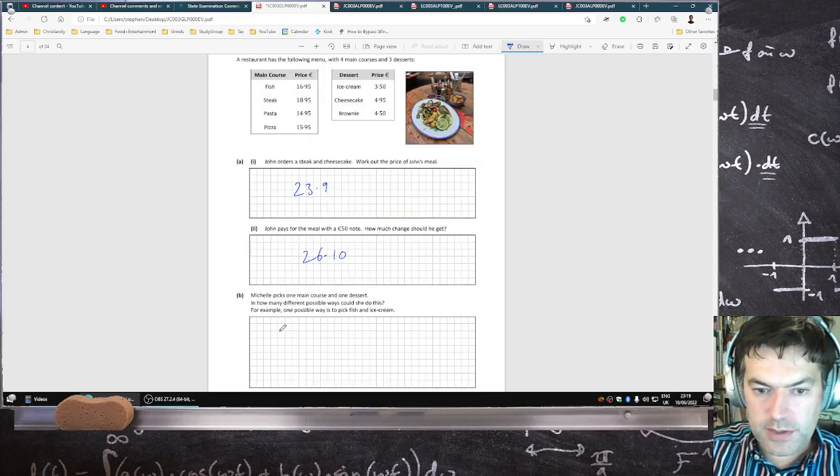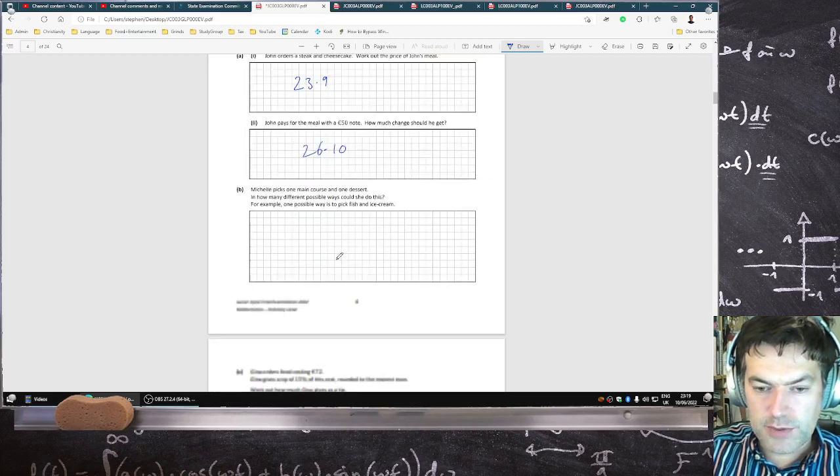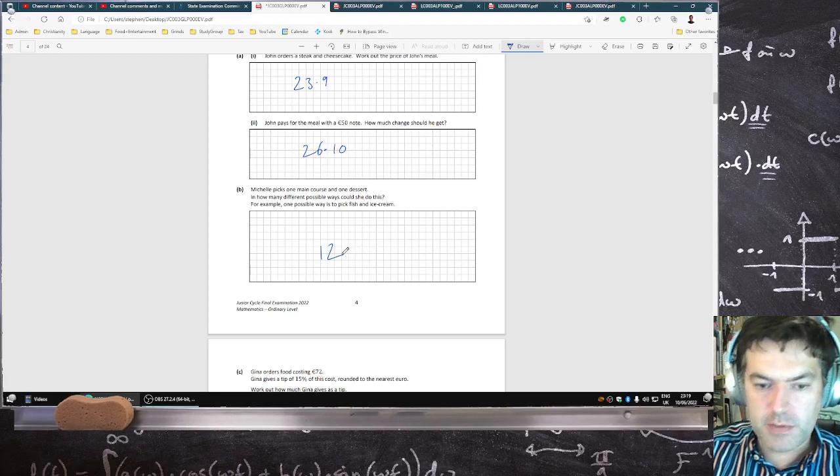Michelle picks one main course and one dessert, how many different possible ways can she do this? So, 4 times 3, 12 possible ways.